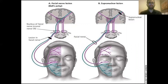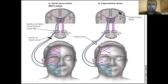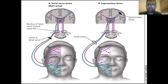Before moving to facial nerve schwannoma, some key clinical points: a lower motor neuron lesion — below the nucleus level — causes complete ipsilateral weakness of the face. An upper motor neuron lesion — above the nucleus, such as at the motor cortex — causes contralateral weakness due to decussation, but only affects the lower face, because the upper face (forehead) receives bilateral cortical input from both hemispheres.